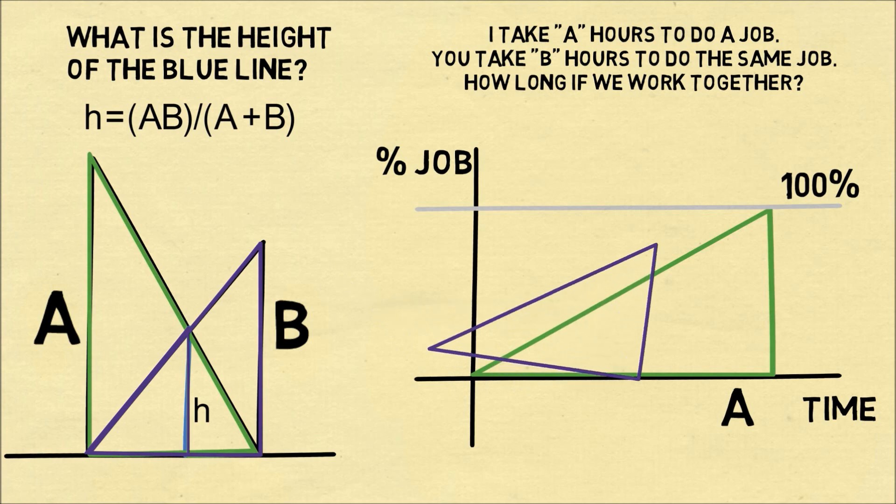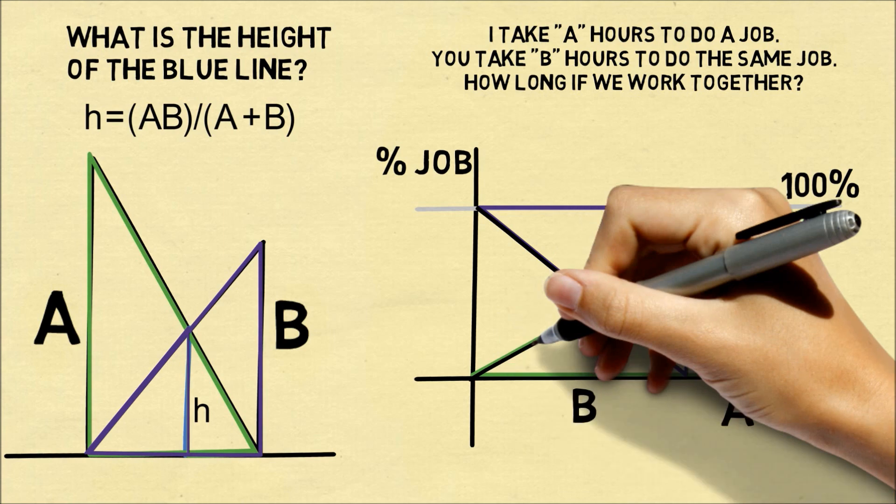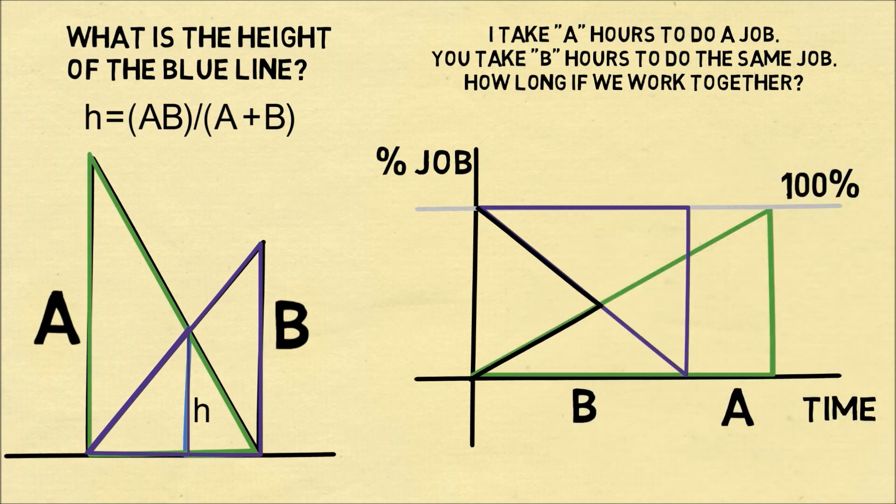If you take b hours to do a job, that means you will complete the job in b hours, going from zero to a hundred percent of the job completed. To see how long it takes to work together, we'll do a little trick. We'll flip the triangle and now imagine that you are working from the end of the job and I'm working from the beginning. The point at which we cross is the amount of time it will take us to work together.